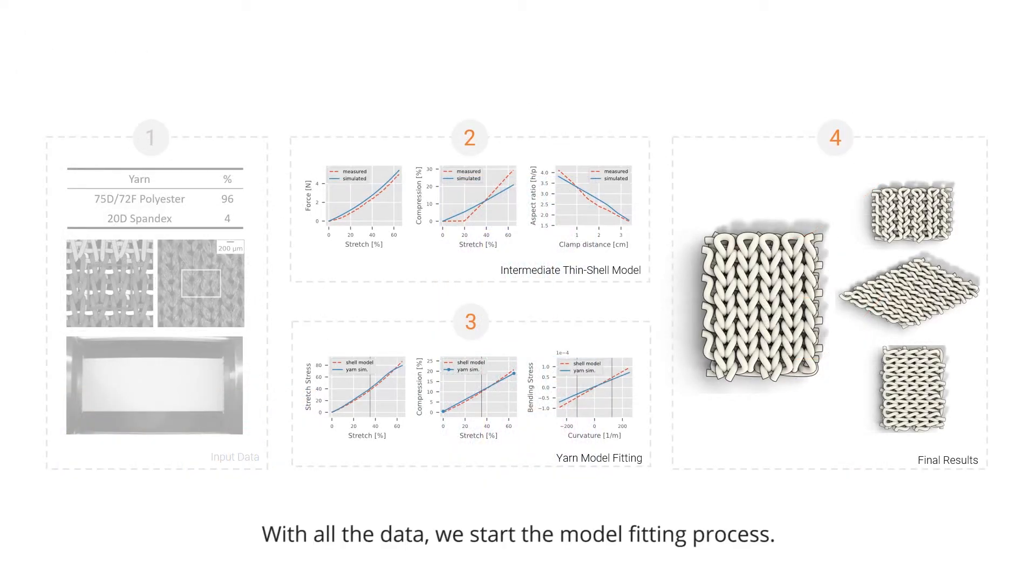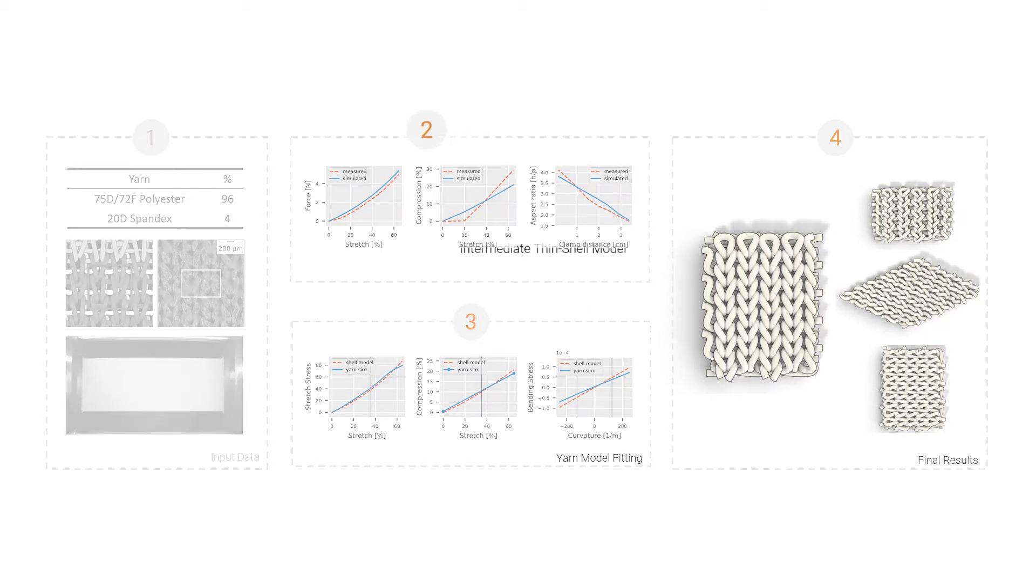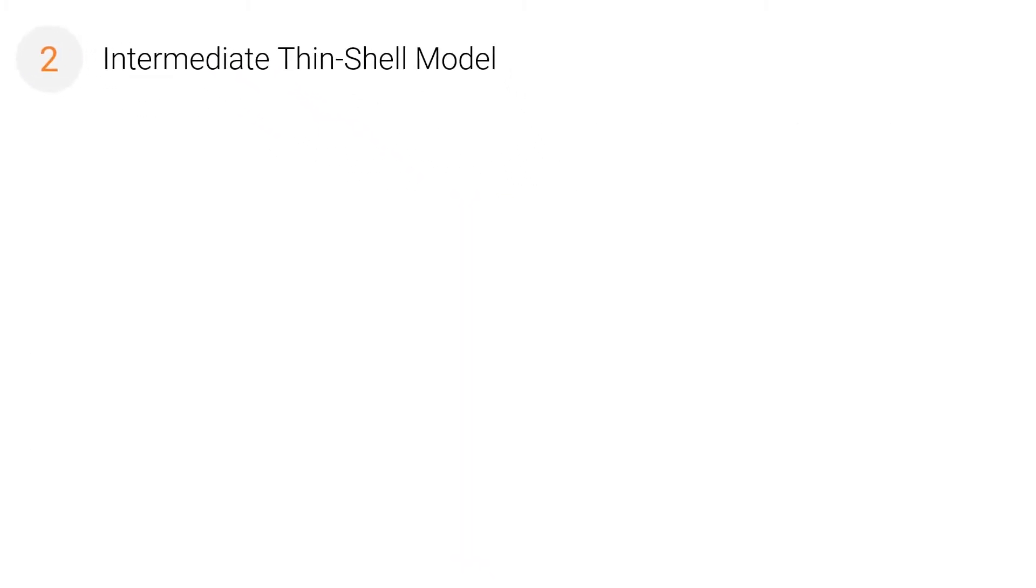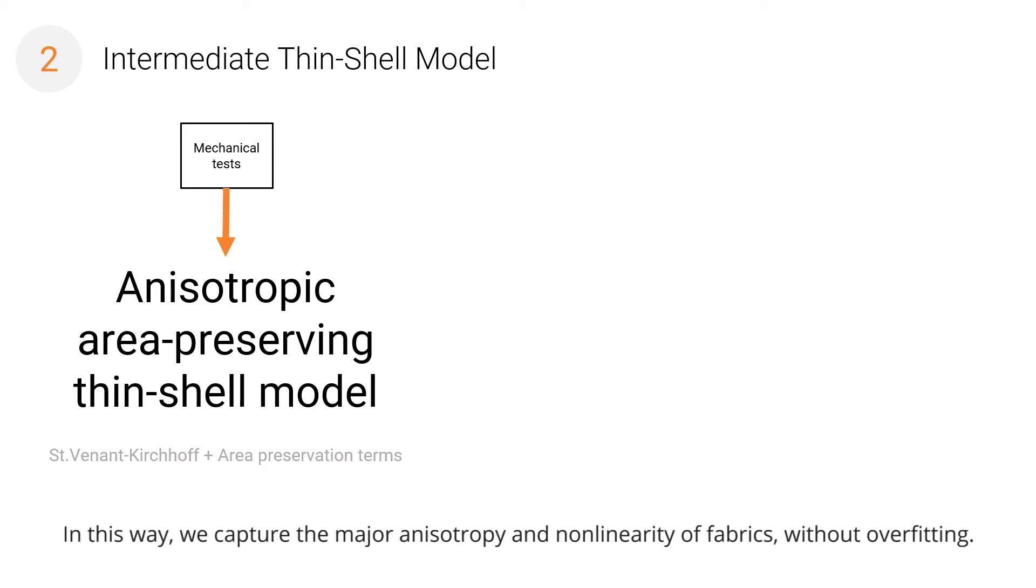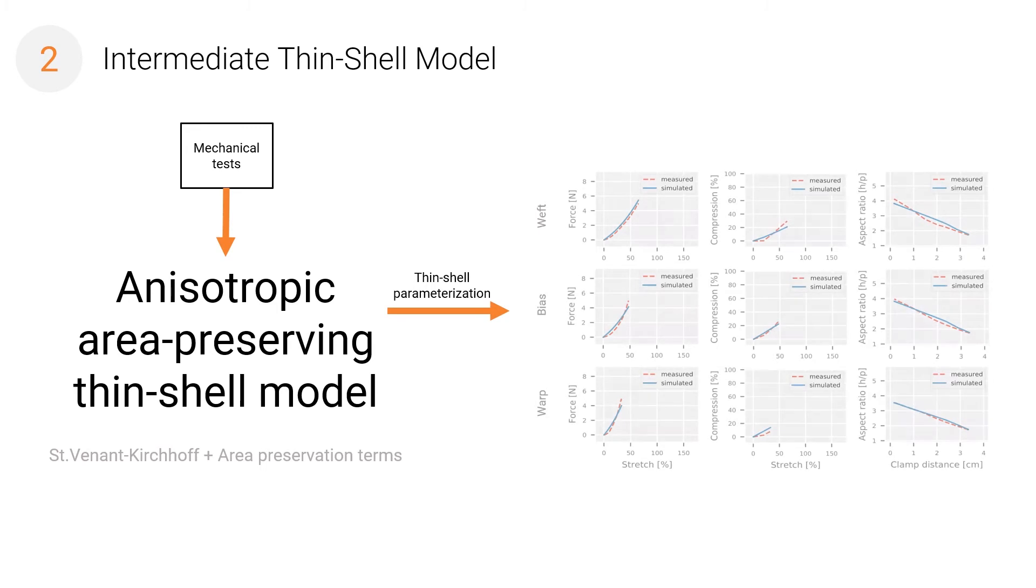With all the data, we start the model fitting process. First we design a thin-shell model. We augment an anisotropic STVK model with new Huckian area preservation terms. In this way, we capture the major anisotropy and non-linearity of fabrics without overfitting. We fit the parameters of the thin-shell model to the swatch-level mechanical tests.